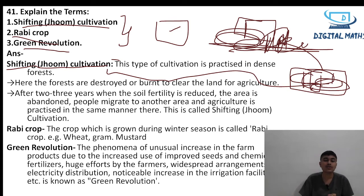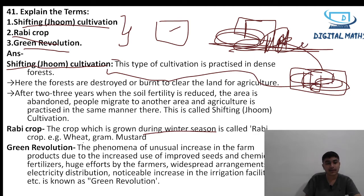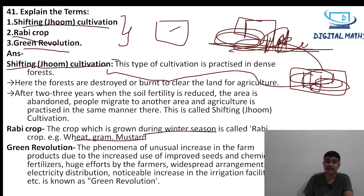Rabi crop is the crop grown during the winter season. Examples of rabi crops are wheat, gram, and mustard. Green revolution refers to the phenomenon of unusual increase in farm products due to use of improved seeds, chemical fertilizers, widespread electricity distribution, and increase in irrigation facilities.